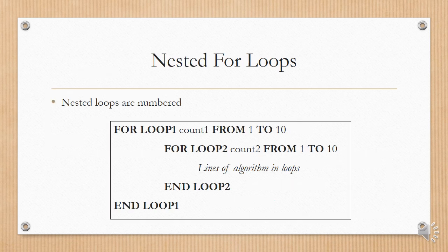If you have nested for loops, you need to number them. The outer for loop would be FOR LOOP 1, with counter count1 from 1 to 10. The inner loop would be FOR LOOP 2, with count2 from 1 to 10. You put whatever lines of algorithm you need, then END LOOP 2, and END LOOP 1. The inner for loop must be neatly indented inside the outer for loop.